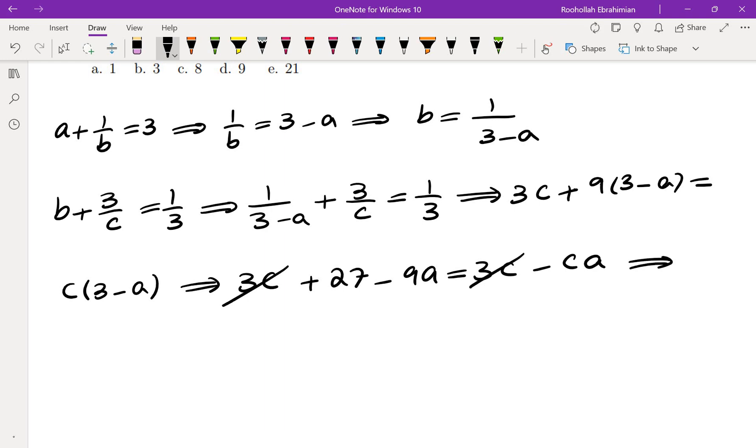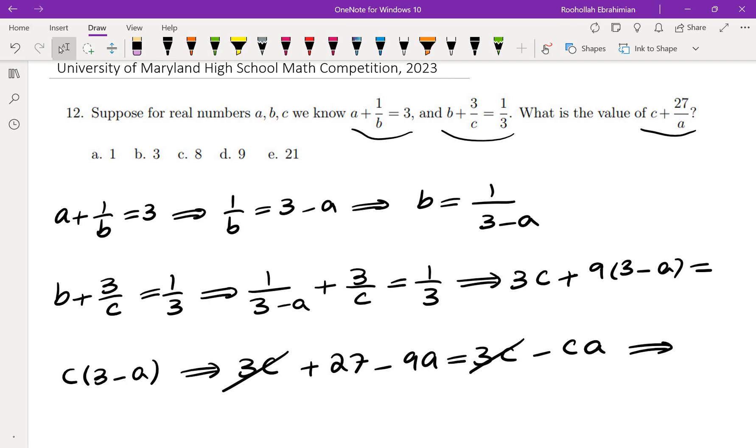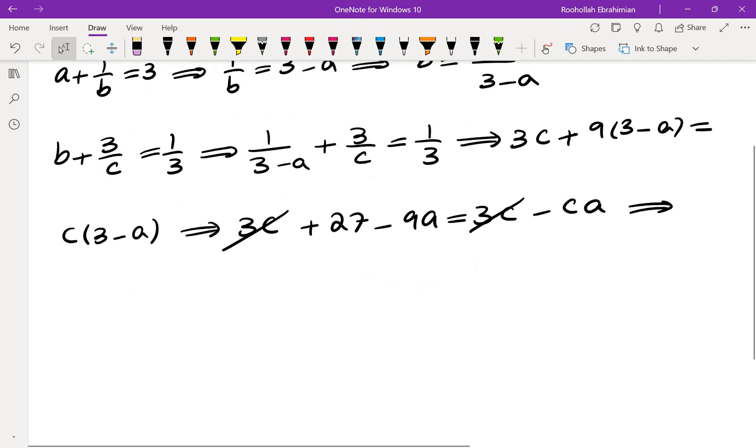3c cancels. Looking back at what we're trying to evaluate, c plus 27 over a, I'm going to put the ca and 27 on one side and the 9a on the other side.